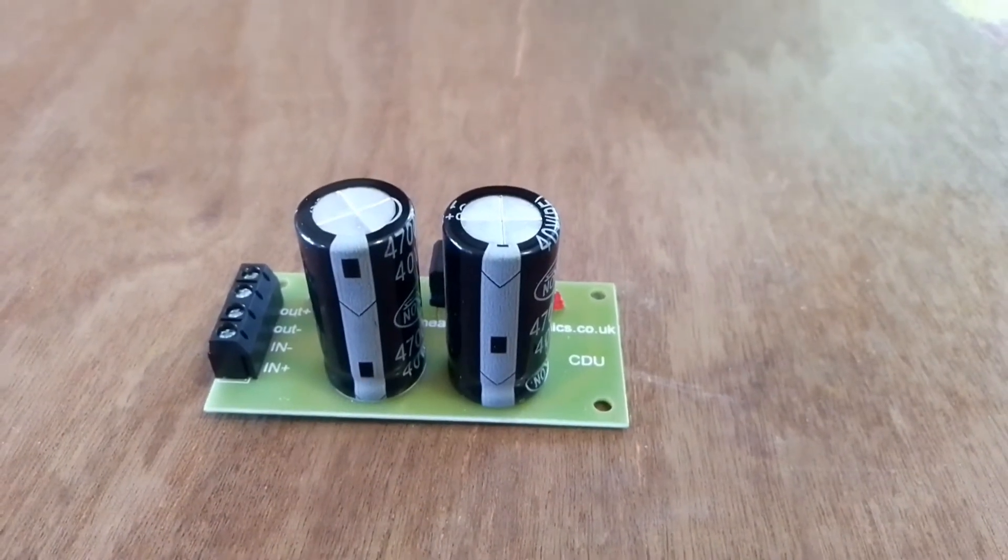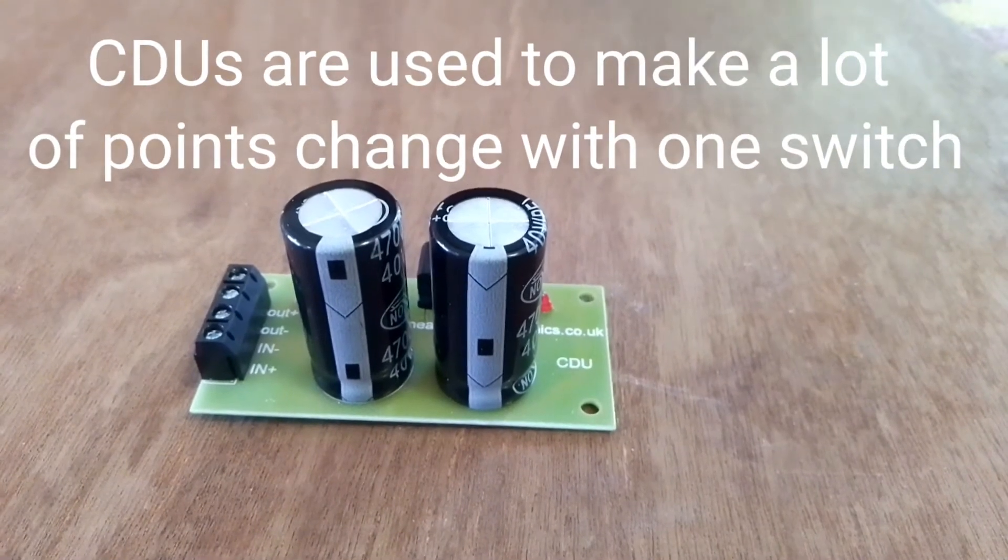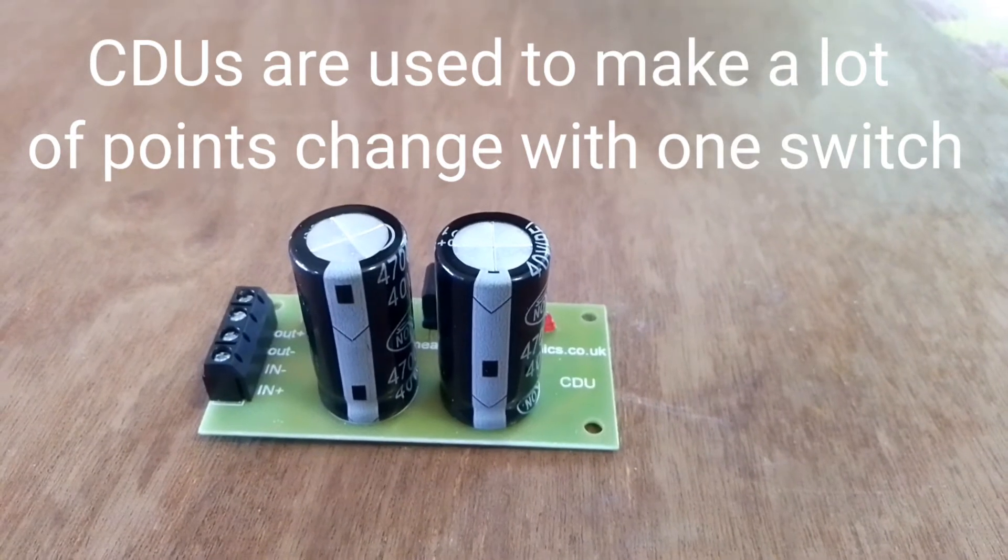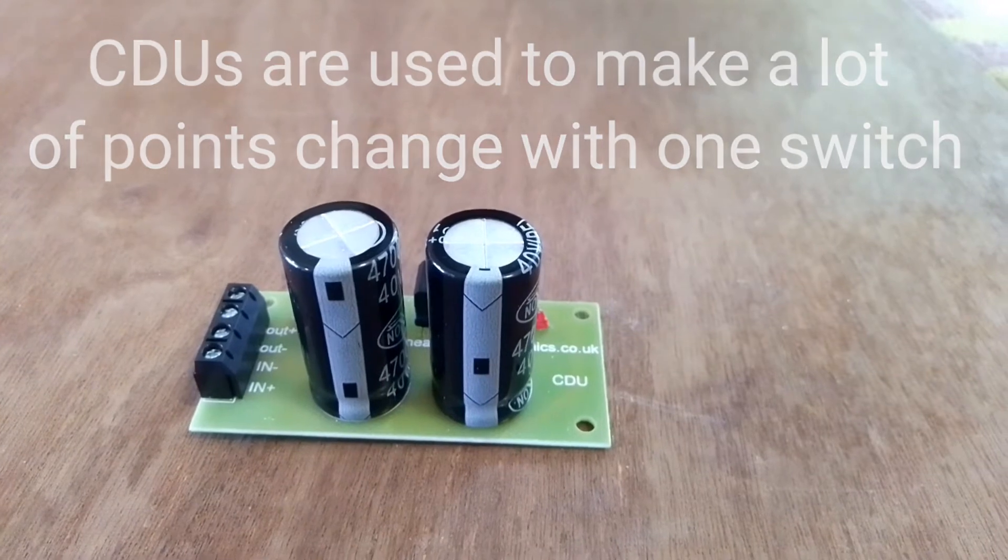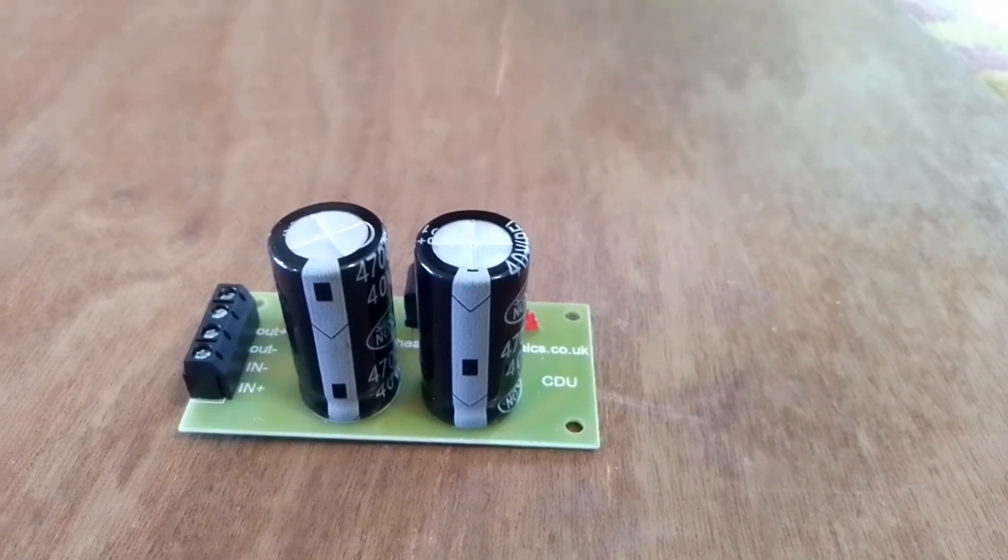CDUs serve two purposes. The first is if you want to make a lot of points change with just one switch so all the point motors are energized at the same time, you're going to need an awful lot of current. The 16 volt AC supply you normally use won't have enough current for this.